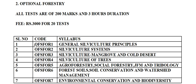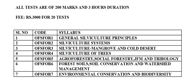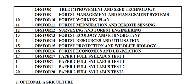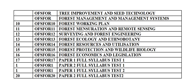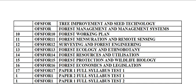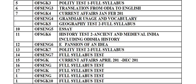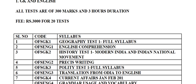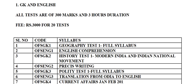The test code is OFSFOR1, covering general silviculture principles. In all, we have 20 tests which cover the entire portion, and after that you also have four full-length full-syllabus tests. All the tests are full length.